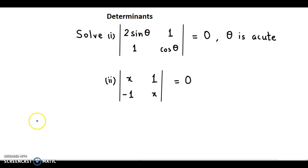So let's do the first question here. We have been given a determinant of 2sinθ, 1, 1, and cosθ is equal to 0.